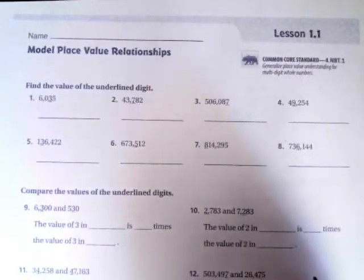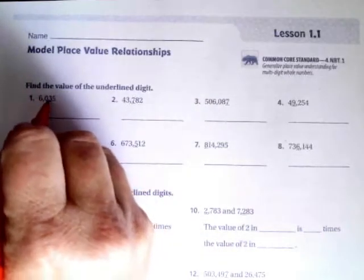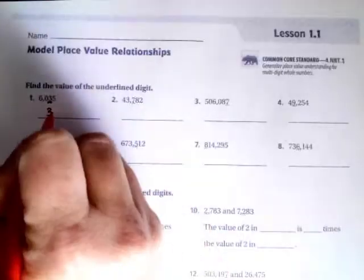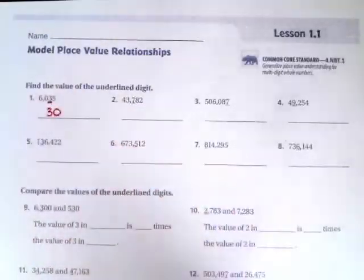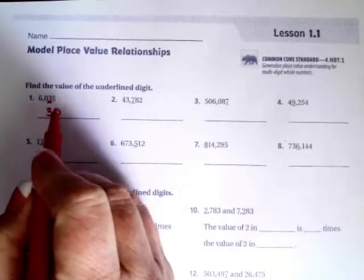This one just wants us to find the value of the underlined digit. All we're going to do is the underlined digit here is a three. We're going to drop that three down and everything afterwards becomes a zero. There's one number afterwards, one zero.